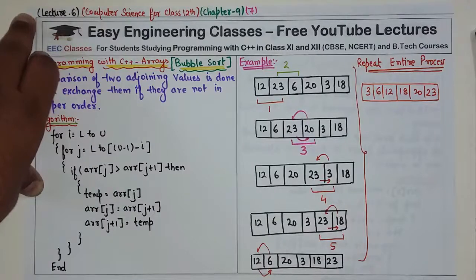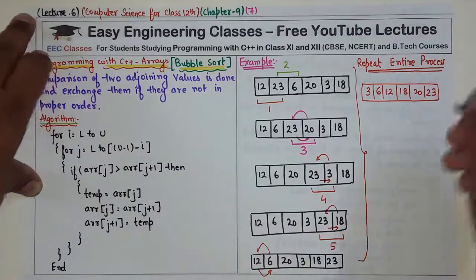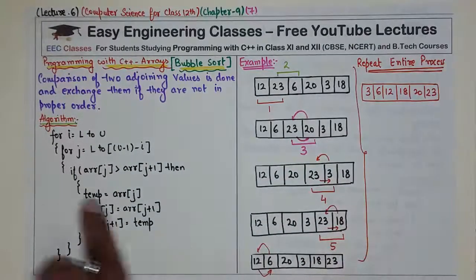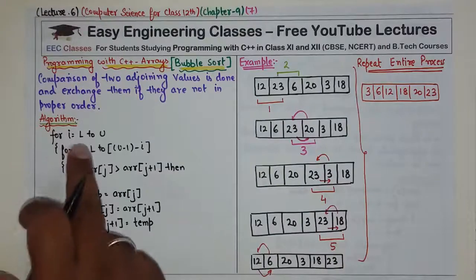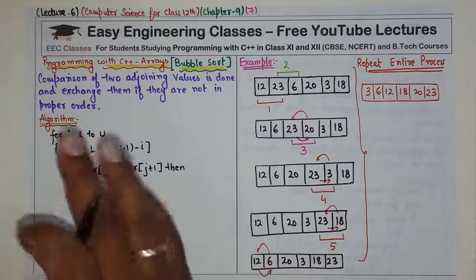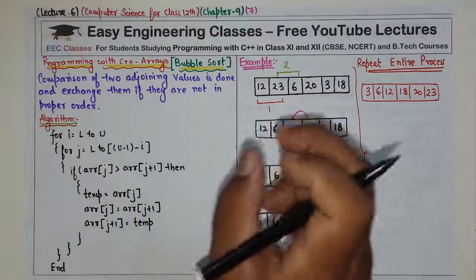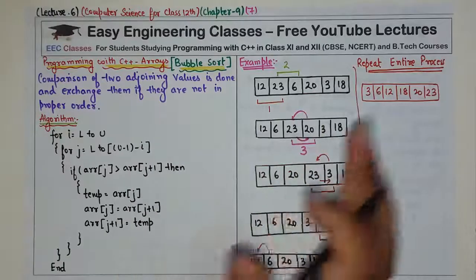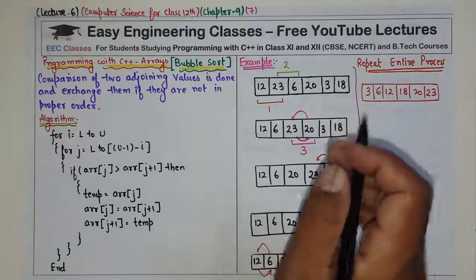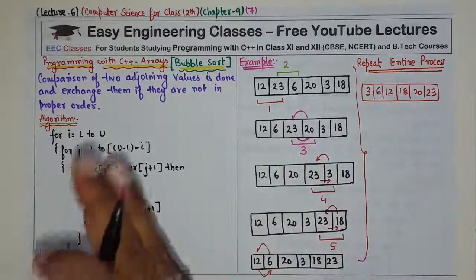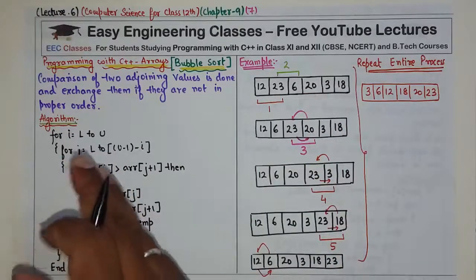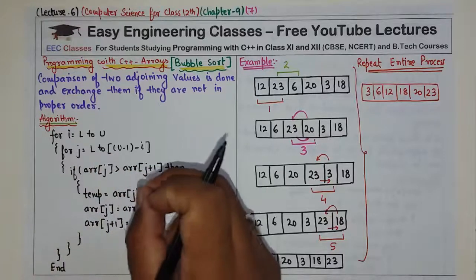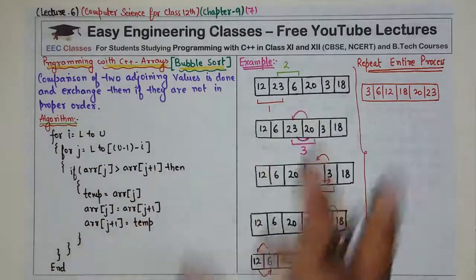So this will be the output. Now let's see the algorithm. i goes from 0 to upper bound, which means size. And j goes from 0 to size minus 1 minus i.